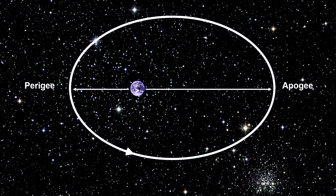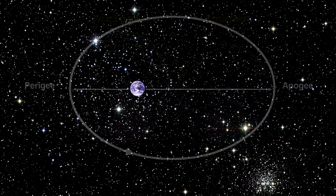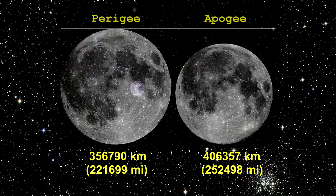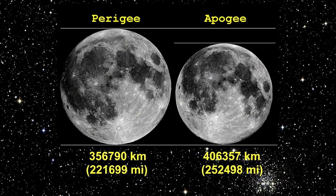Of course the Moon travels in an elliptical orbit around the Earth, so its distance varies. Here's how different Full Moons look between the closest and furthest points.